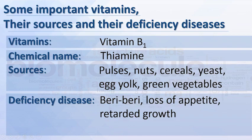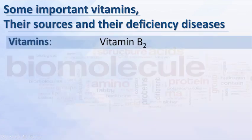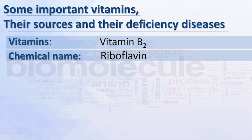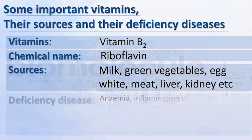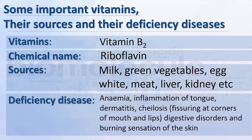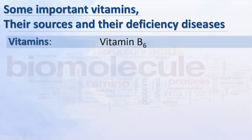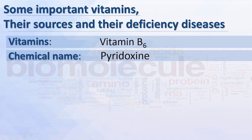Vitamin B1 deficiency also causes loss of appetite and retarded growth. Vitamin B2: chemical name riboflavin; sources include milk, green vegetables, egg white, meat, liver, and kidney. Deficiency causes anemia, inflammation of tongue, dermatitis, calluses, and fissuring at corners of the mouth and lips, as well as digestive disorders and burning sensation of the skin.